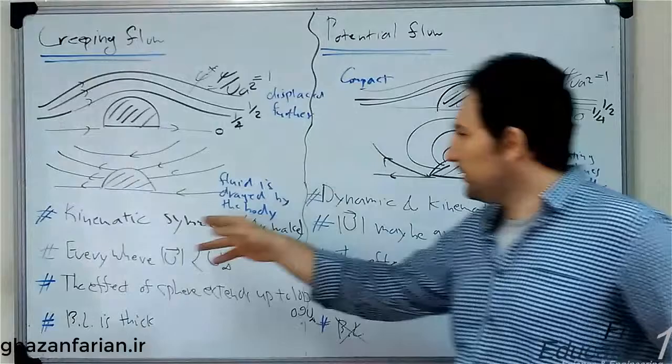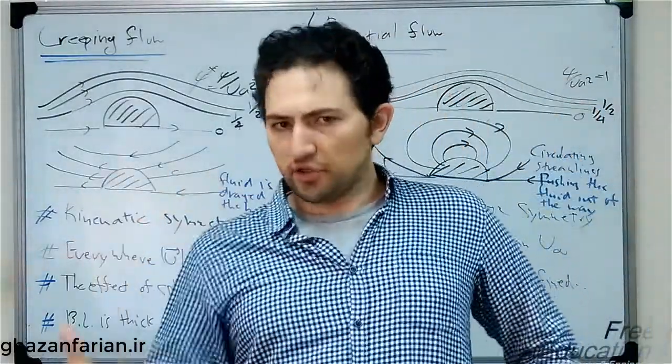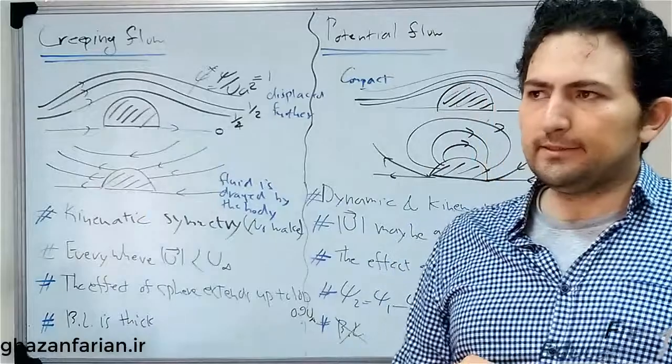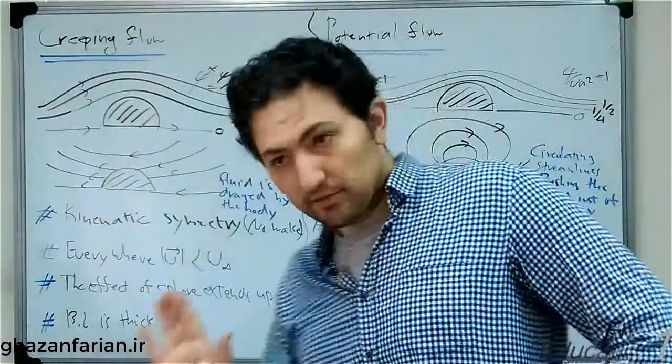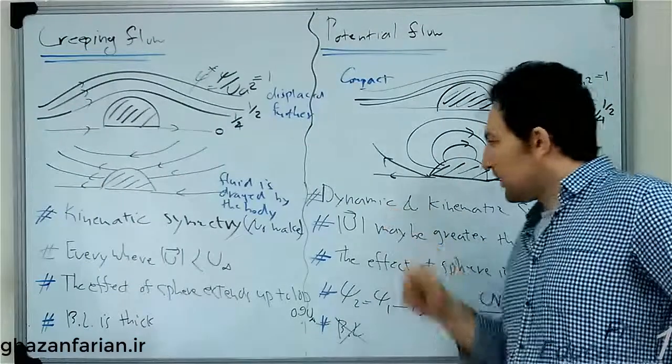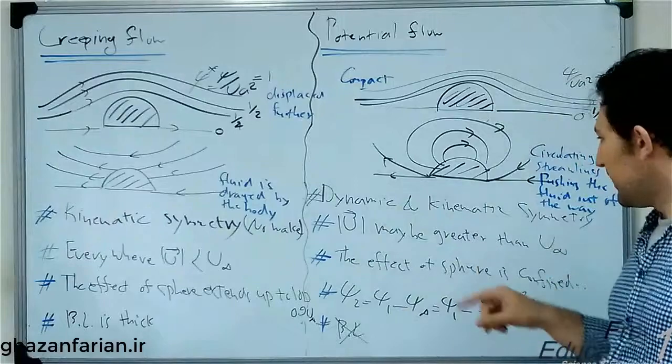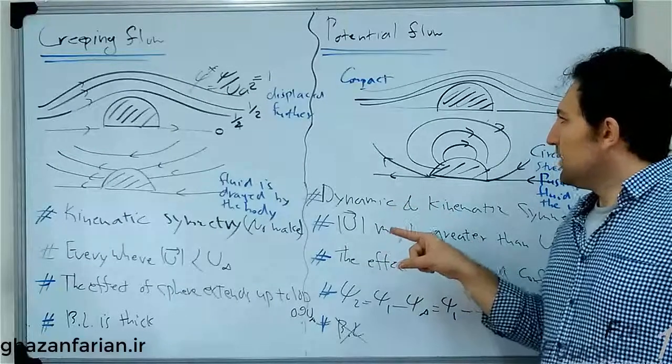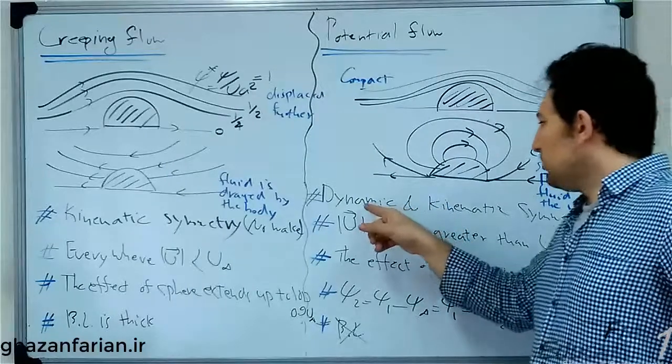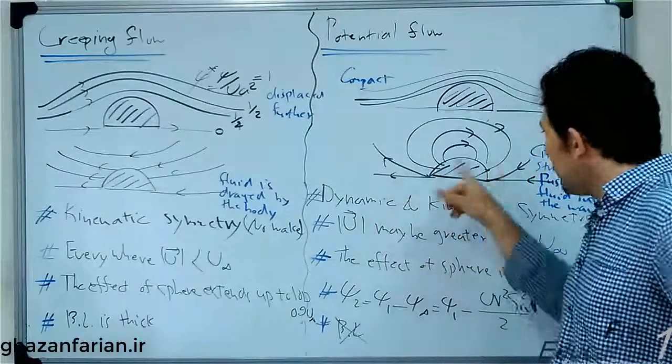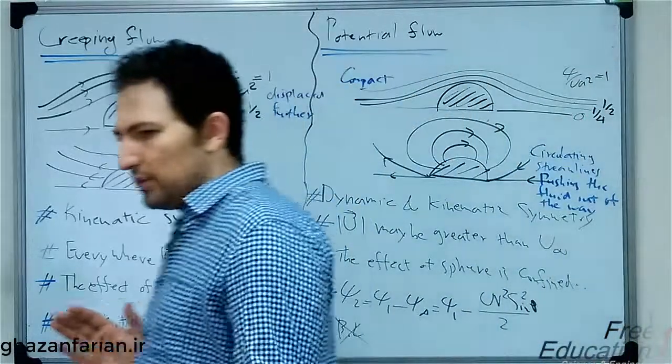It means that in the creeping flow, the kinematic parameters, such as the velocity and streamlines, are symmetric. It is also symmetric with respect to the vertical axis here. So the pressure on both sides of the sphere is the same. So the drag force is zero. This is D'Alembert's paradox.